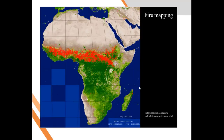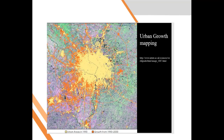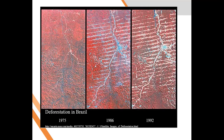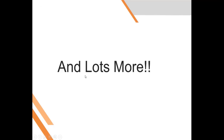Remote sensing can also be used for fire mapping and urban growth mapping using satellite imagery. For example, this shows deforestation in Brazil — this is an image from 1975, this is 1986, and this is 1992. You can see the trees are reducing due to urbanization encroaching on the forest. With remote sensing you can study a given activity over a period of time — this is called time series analysis, where you analyze images at different time intervals to detect changes.